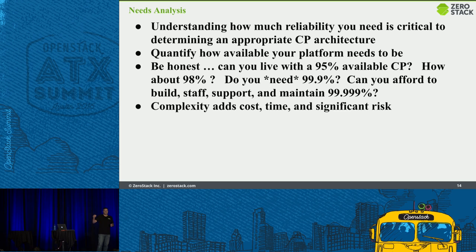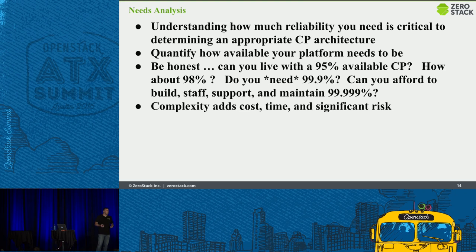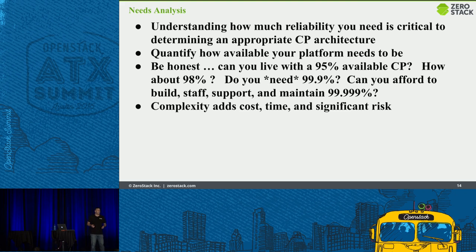Some of the black-and-white metrics management will want: what's your availability requirement? 98%? 95%? Most people won't shoot for 95%, but realistically for a small platform of a dozen hypervisors doing playground work, 95% on your control plane might be sufficient. Don't build a 99.999% control plane for that environment — you'll end up with something far worse, like 70 or 80% uptime.